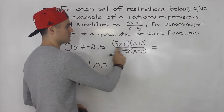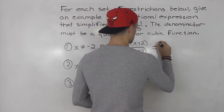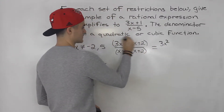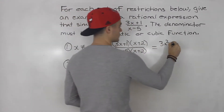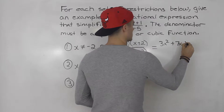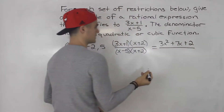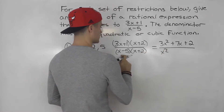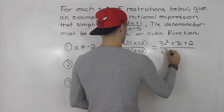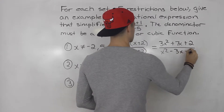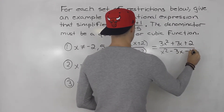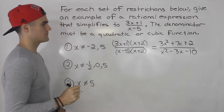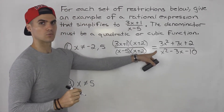Usually the factored form is okay, but if you were to expand it, you would end up with 3x squared plus 7x plus 2 in the numerator. In the denominator you'd have x squared minus 3x minus 10.